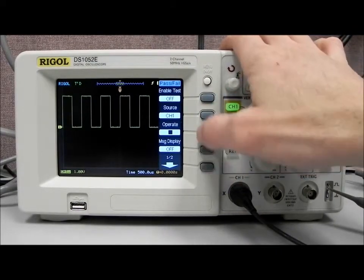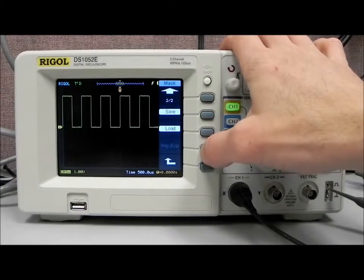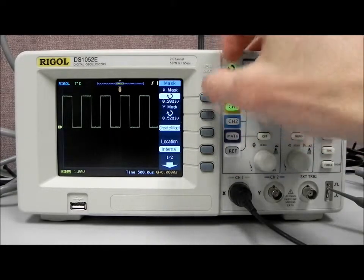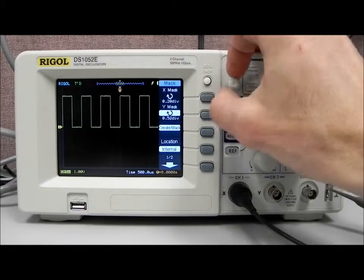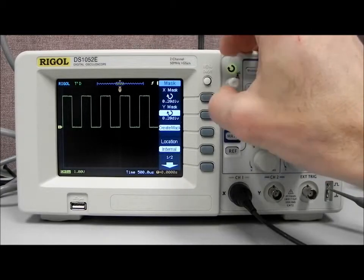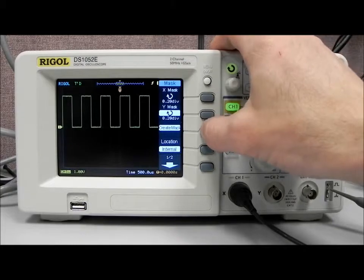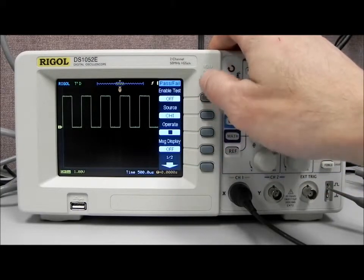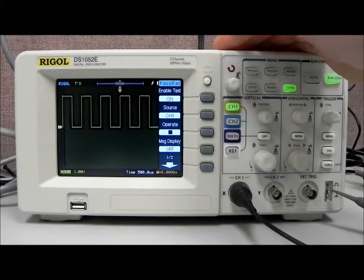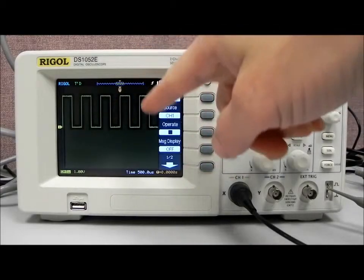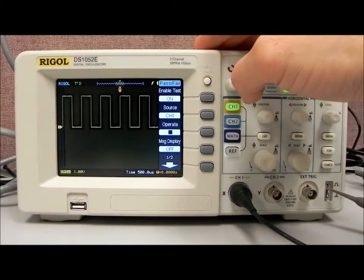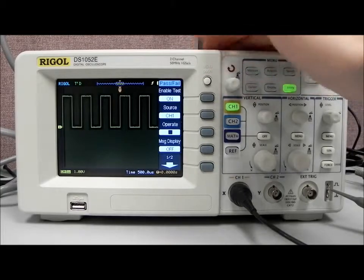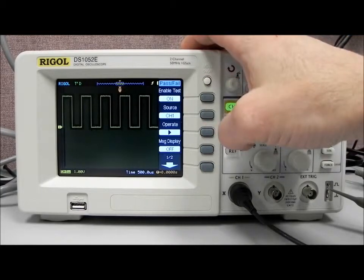So we can go up to mask, and we can actually set the number of divisions or percentage of the division that's going to be the X mask and the Y mask as well. So we'll make both of those 0.20 divisions. We can create that mask, but let's just get back up into the mask setting. So we can enable that test, and now you can see, by enabling the mask, we have basically put a framework around the incoming signal that says, okay, this is what's going to be a pass area.